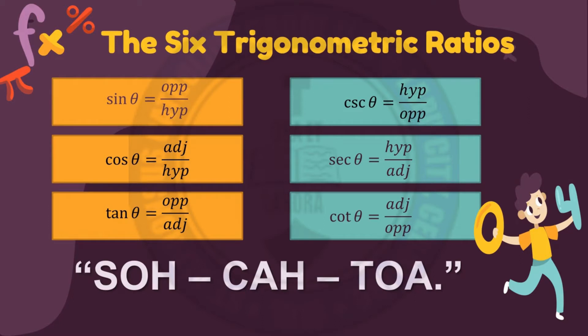Sine theta is equal to opposite over hypotenuse. Cosine theta is equal to adjacent over hypotenuse. Tangent theta equals opposite over adjacent. Cosecant theta, secant theta, and cotangent theta are just the inverse functions of sine, cosine, and tangent.